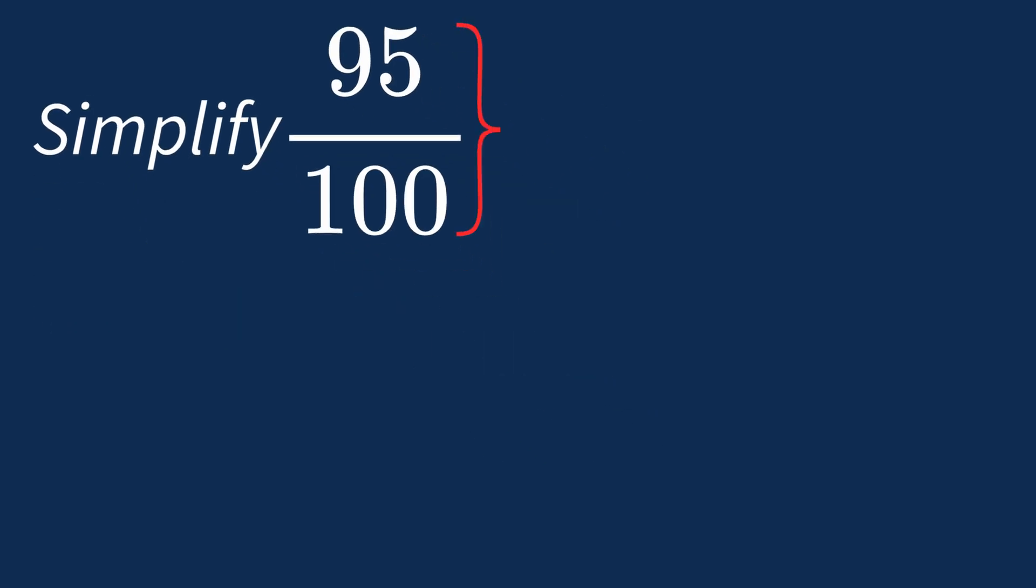To simplify 95 over 100, we need to look for the common factors between the top number, the numerator, and the bottom number, the denominator.